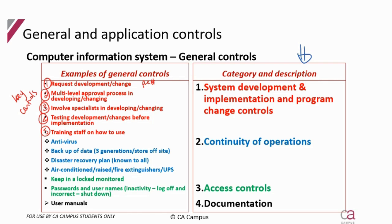Antivirus and backups fall under the category of continuity of operations — they prevent loss of data so the business can continue operating. For backups, you need to have three generations of backups, and the latest one should be stored off-site so that if something happens on site, that backup is still available.